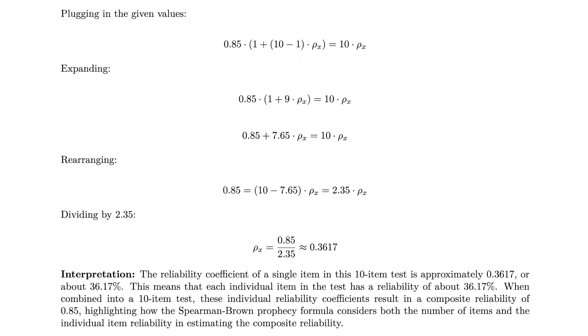So what does this mean? It means that the reliability coefficient of a single item in this 10-item test is approximately 36.17%. That might seem low for a single item, but when combined into a 10-item test, these individual reliability coefficients result in a composite reliability of 0.85. It's an interesting insight into how individual item reliability and the number of items work together to shape the overall composite reliability. By understanding how to manipulate the Spearman-Brown formula, you'll be well-equipped to analyze the reliability of various tests and measures in real-world situations.